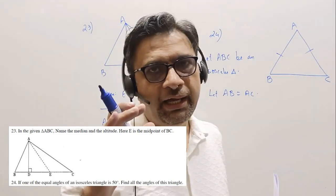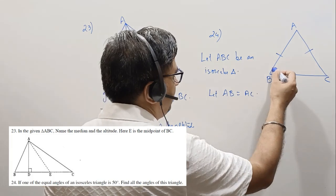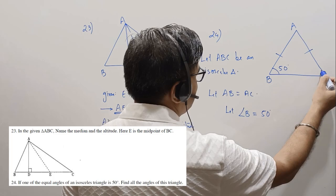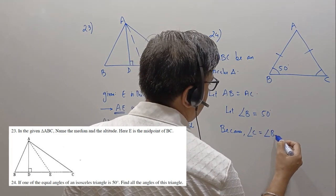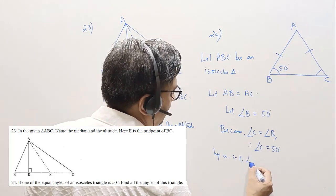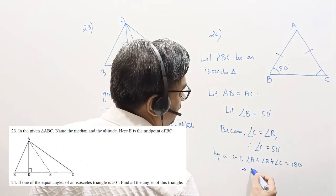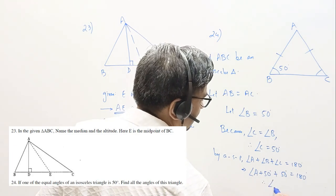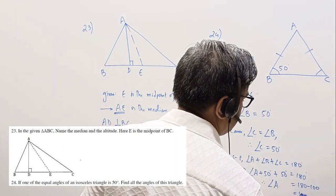Let angle B be equal to 50 degrees. Now, because angle C is equal to angle B, angle C also becomes 50 degrees. By the angle sum property, angle A plus angle B plus angle C is equal to 180 degrees. That gives us angle A plus 50 degrees plus 50 degrees equals 180 degrees.